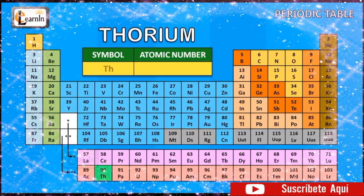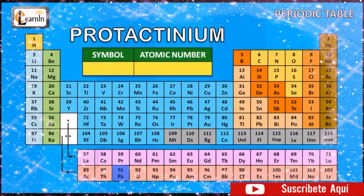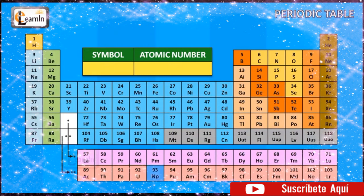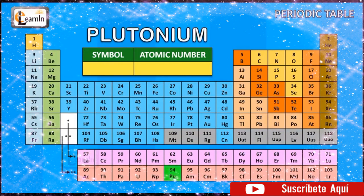The element thorium is represented as Th and has an atomic number of 90. The element protactinium is represented as Pa and has an atomic number of 91. The element uranium is represented as U and has an atomic number of 92. The element neptunium is represented as Np and has an atomic number of 93. The element plutonium is represented as Pu and has an atomic number of 94.